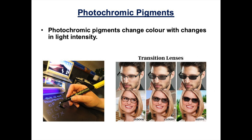A second use of photochromic materials would be transition lenses. These lenses in glasses change colour in different amounts of light intensity, so they could darken if you wore them in bright UV light.